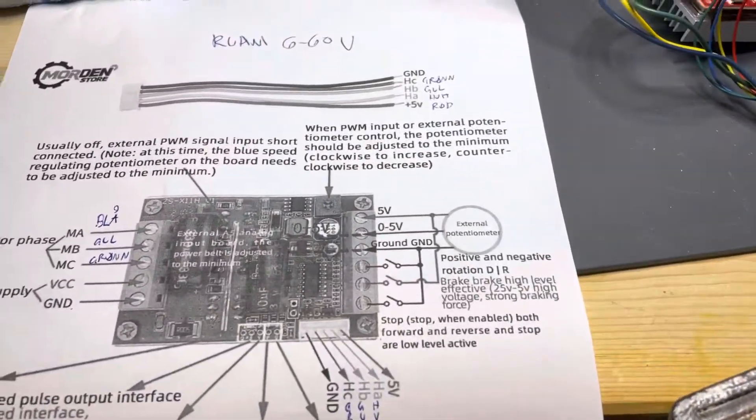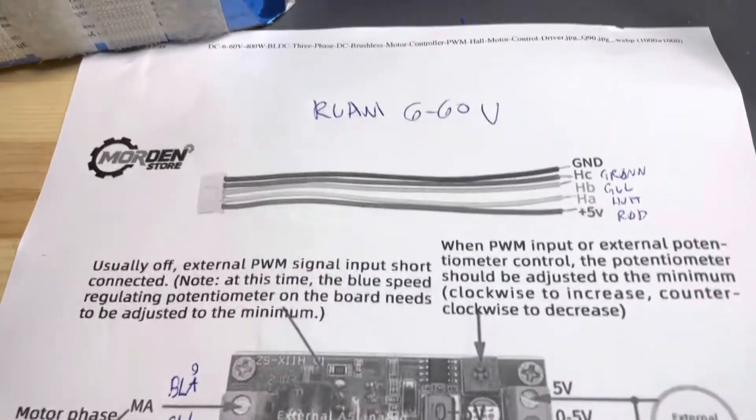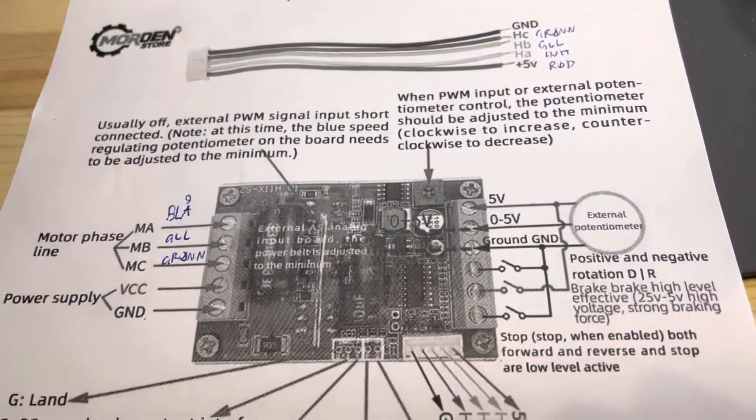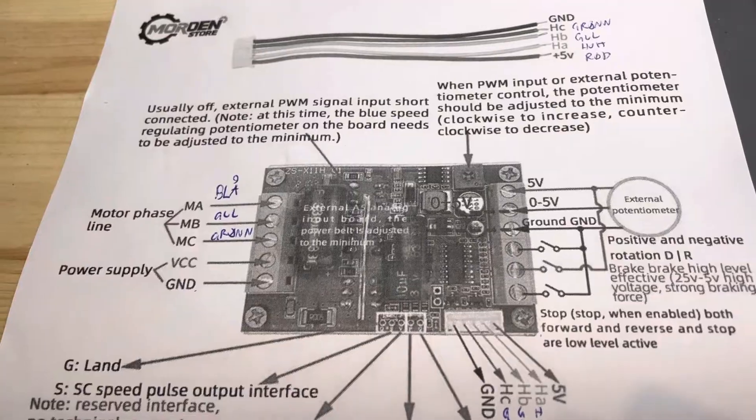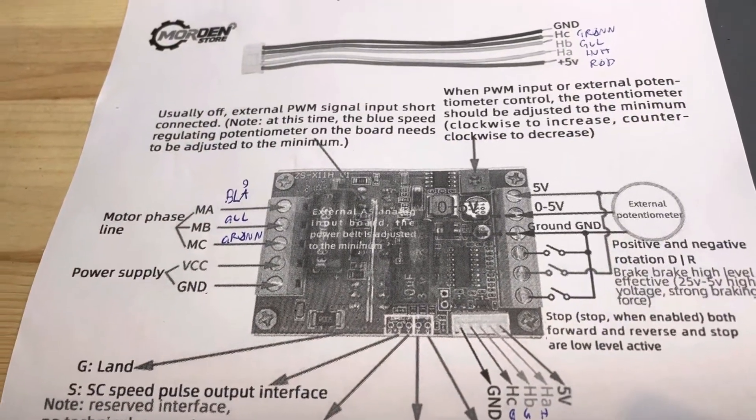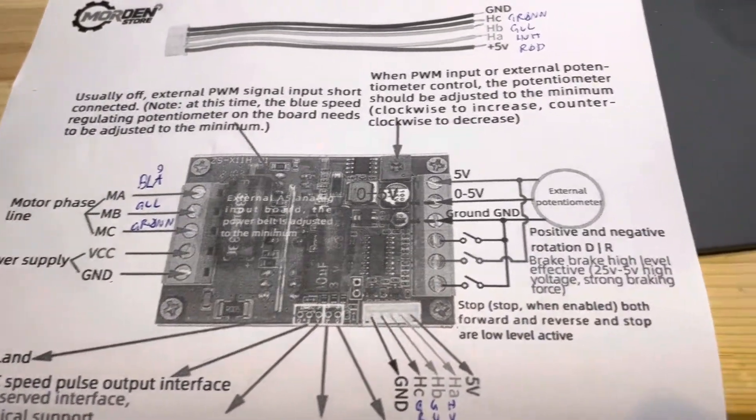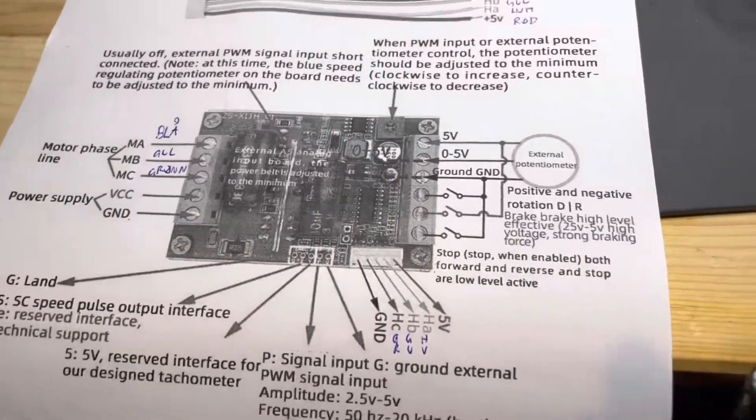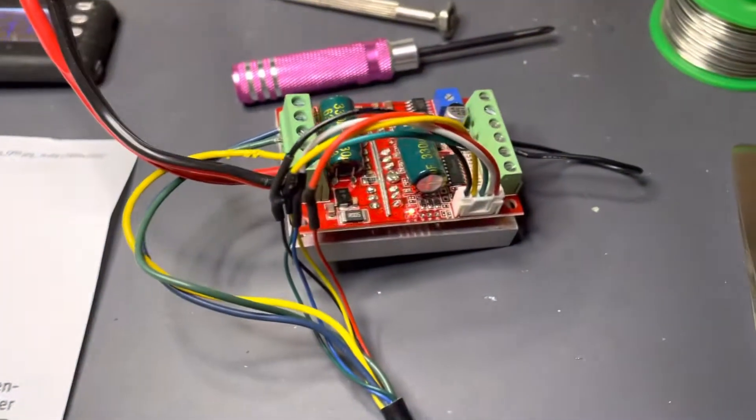So what I ended up with was ordering this Vuruani 6 to 60 volts brushless motor controller with hall sensor input. There's a few other videos out there on YouTube as well, some very good videos. Just a quick summary of my experience.